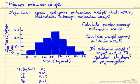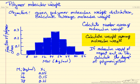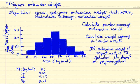In this example, we're given a polymer molecular weight distribution. We want to calculate the average molecular weight — two types of averages: a number average and a weight average. And if the molecular weight of the repeat unit of the monomer in the polymer is 56, we'll also calculate the degree of polymerization.